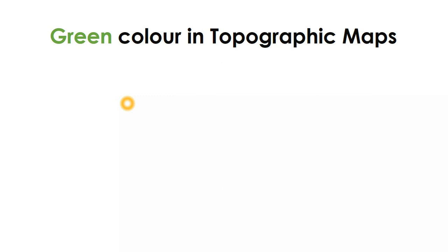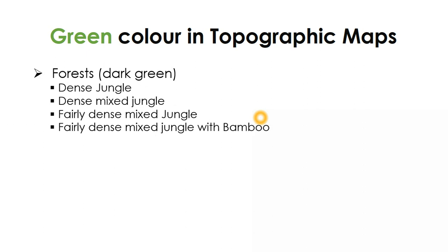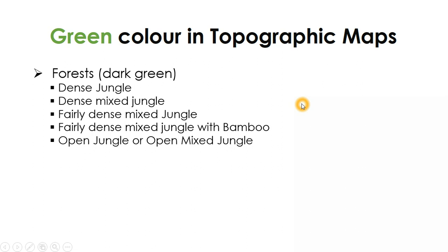Moving on to green color, which is used for showing vegetation. Within vegetation we have forests of various types: dense jungle, dense mixed jungle. 'Jungle' in this context indicates a forest area, a term taken from Hindi. We also have fairly mixed jungle, dense mixed jungle with bamboo, open jungle, and open mixed jungle — all different types of jungles. These are all shown using green color.